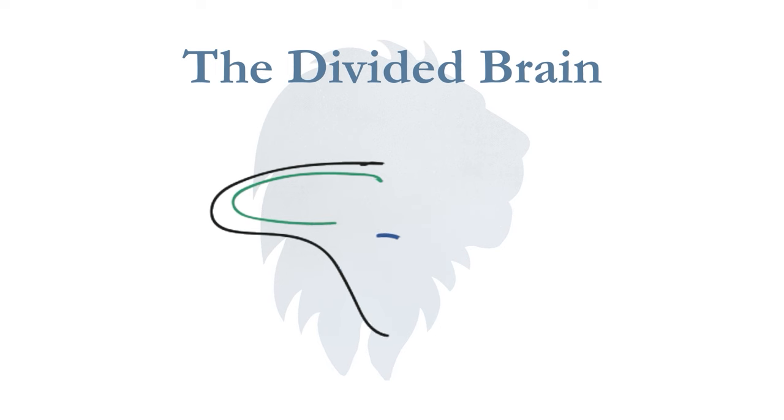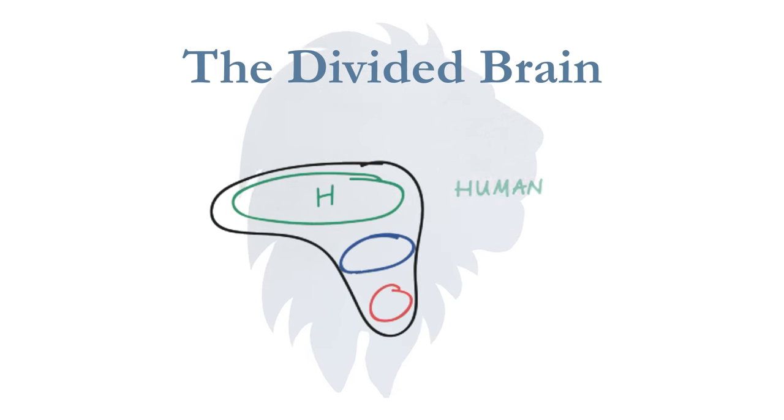Our brains are divided into three parts: the human brain, the mammal brain, and the reptile brain. These layers of the brain have built up over the course of our evolution. Roughly speaking, the reptile is responsible for the freeze response, the mammal is in charge of fight or flight, and the human runs our social engagement system.